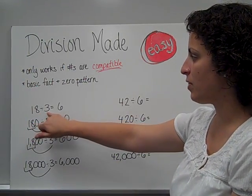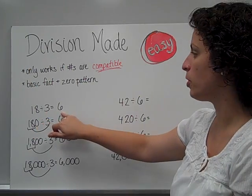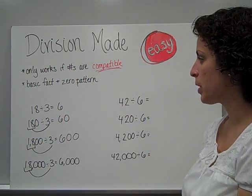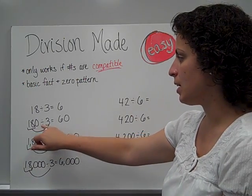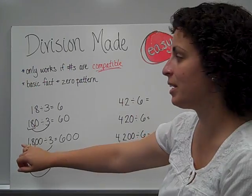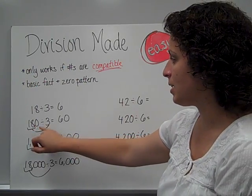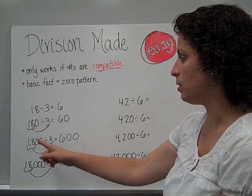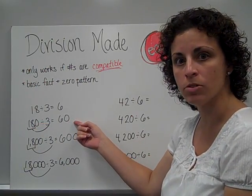So 18 divided by 3 is our basic fact, and we know that that is 6, because 6 times 3 is 18. So now here I have 18 again, even though this was 180. There's still 18 in that, this time it's just 18 tens. Well, 18 divided by 3 would be 6, and then I have one zero here, so that one zero joins my answer.